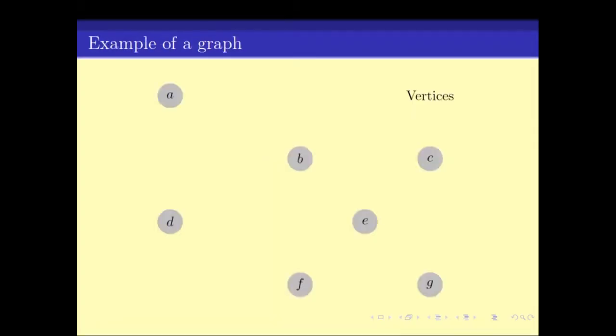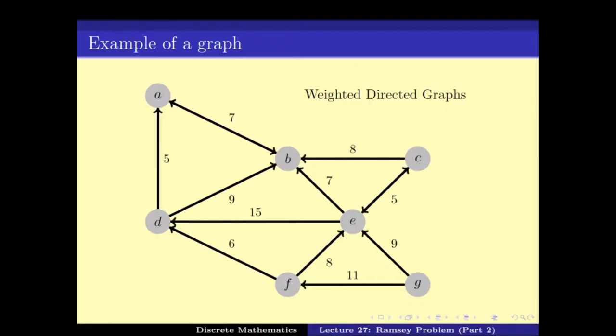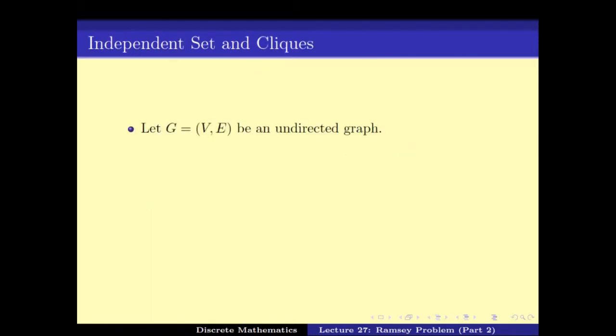We can also have weights assigned to edges. If there is an edge from u to v, then we say v is a neighbor of u, and in an undirected graph the degree of v is the total number of neighbors of v. Pictorially, vertices are drawn as points and edges as lines joining them; there can be weights on edges and directions on edges to represent the asymmetric version.